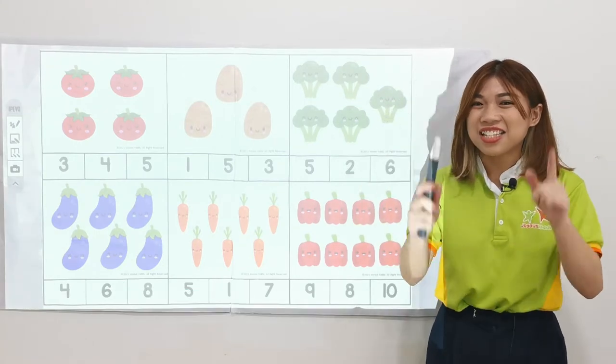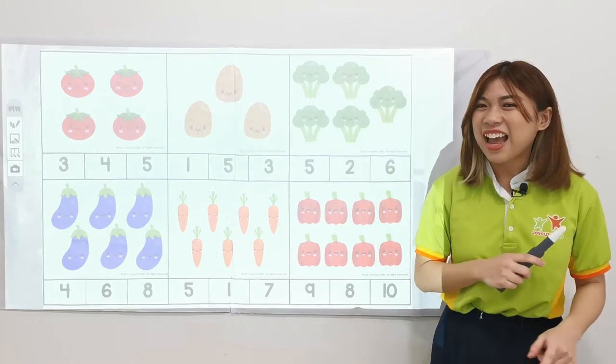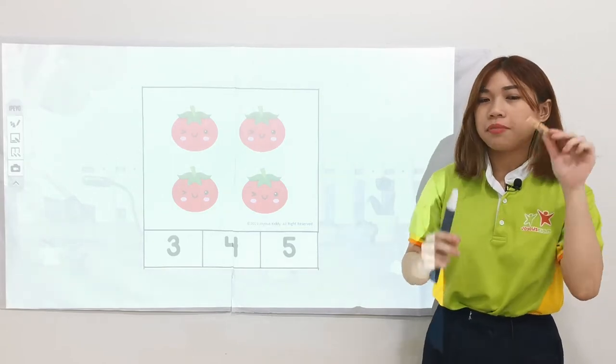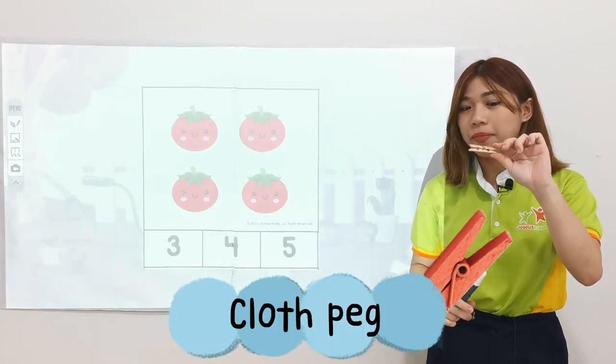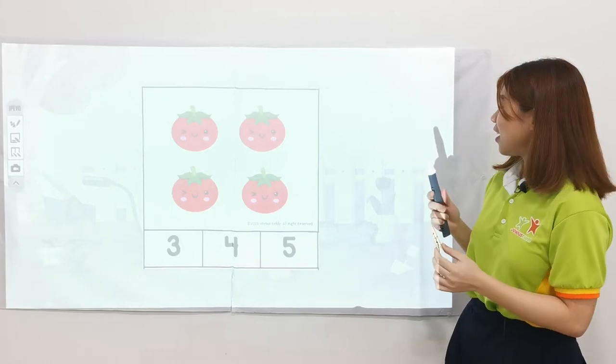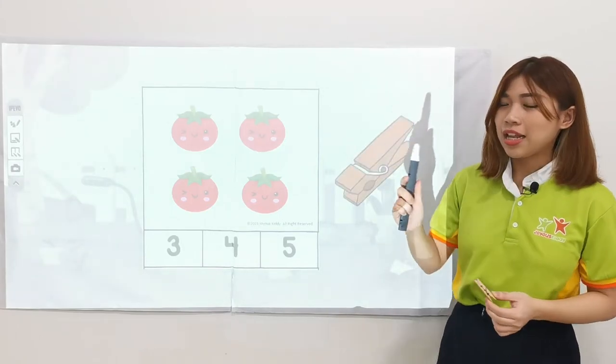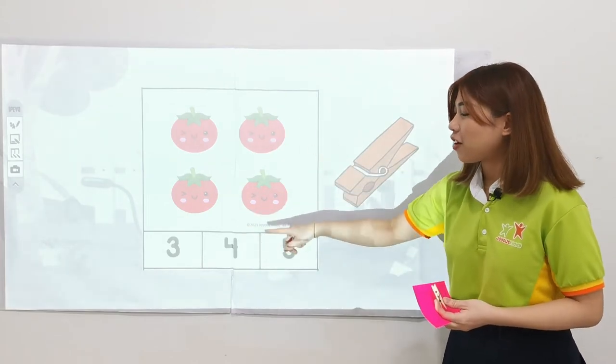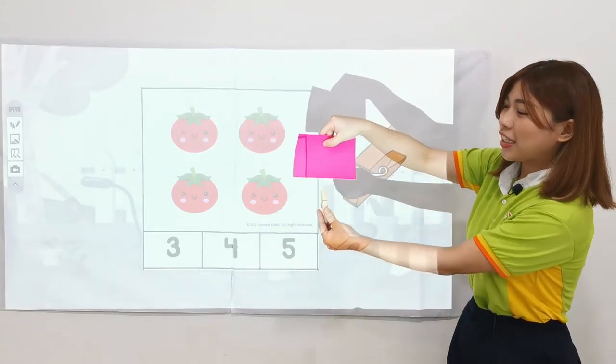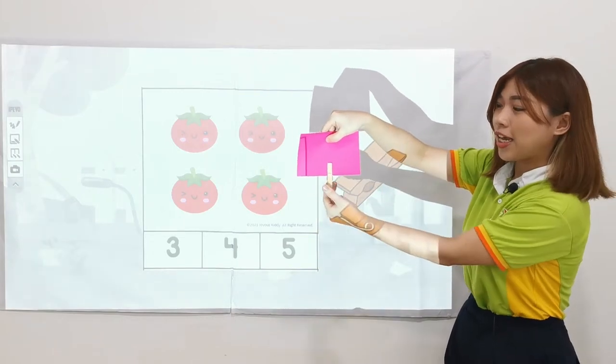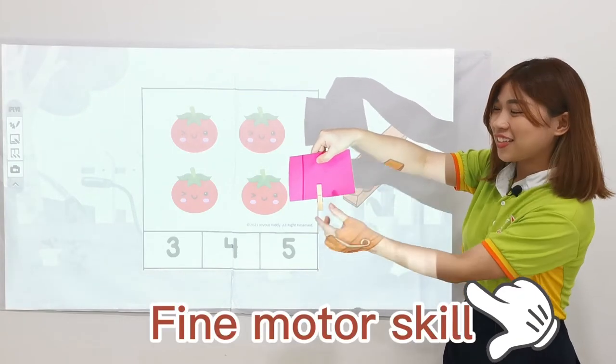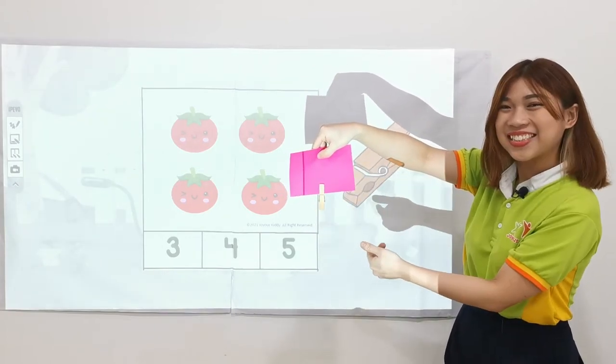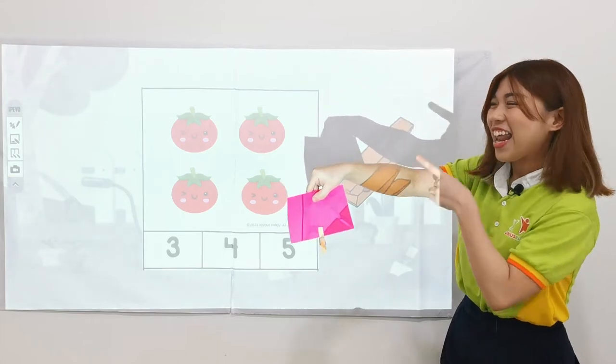Awesome children! So are you ready to start the counting activity? Let's go! Alright children, so before we start you may take out the clothespin pack from your learning box like this. Yes, this one. After that, we can count the number of vegetables together and find the correct number. Then you can clip like this on the paper. So it can also help to work on your fine motor skill. So are you ready? Let's go!